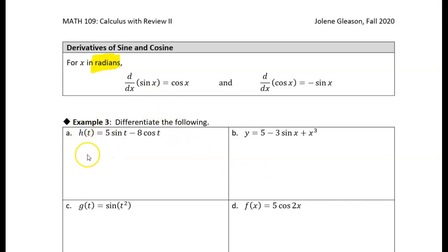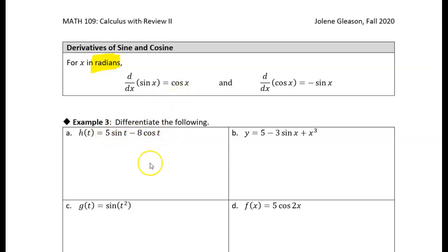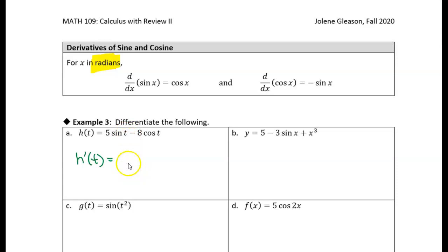Let's start with this one. We have h of t equal to 5 sine of t minus 8 cosine of t. This is just a difference of two functions, and they're constant multiples of the sine and cosine functions. So h prime of t — we take the derivative. We've got a constant multiple of the sine, so the derivative of a constant multiple of sine is just a constant multiple of the derivative. Derivative of sine is cosine.